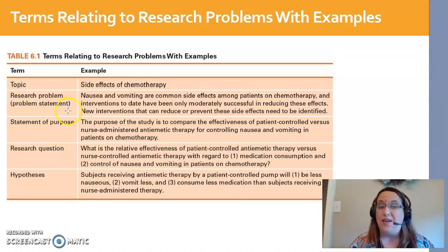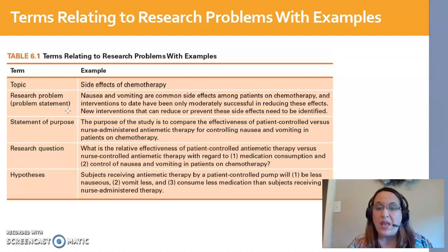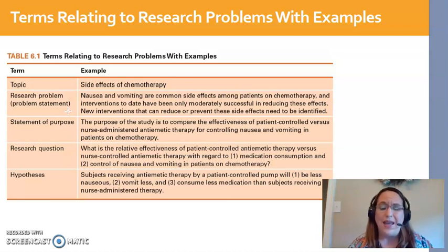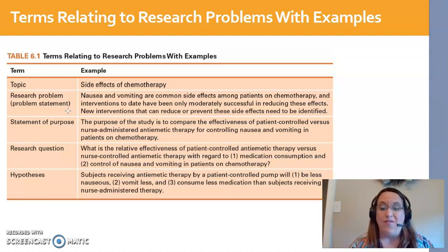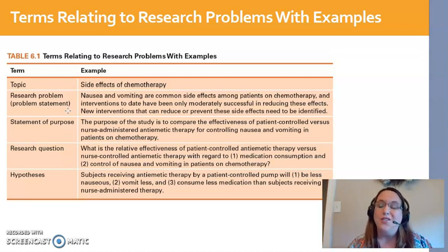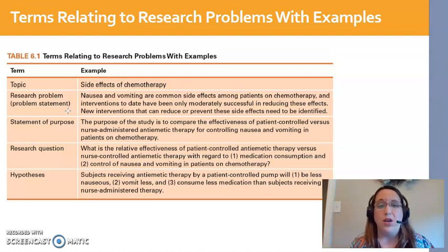Here's a brief example of a problem statement: nausea and vomiting are very common side effects for patients receiving chemotherapy. We've had interventions in the past that have been somewhat successful in reducing nausea and vomiting. However, there may be better interventions that can prevent those side effects rather than just managing them after they occur. We need to identify those interventions so we can implement them and help our patients improve their quality of life. That's a problem statement — an argument for what the topic is and why it's important.